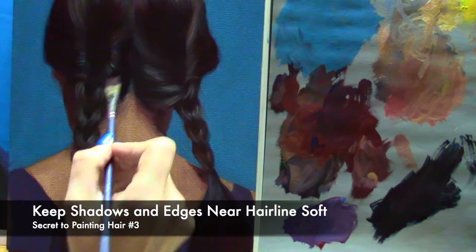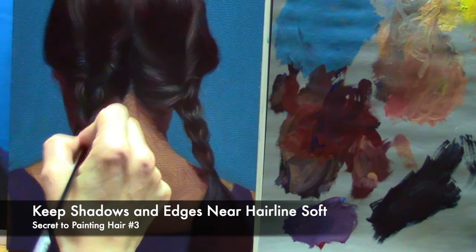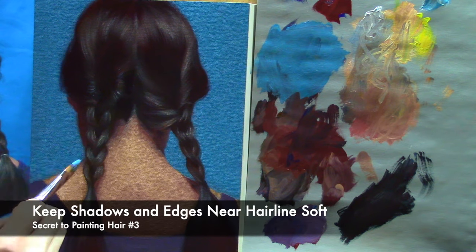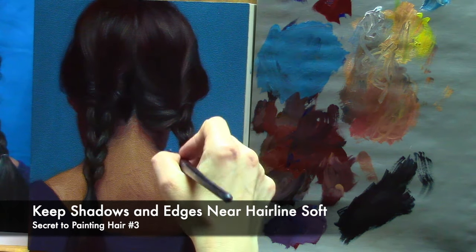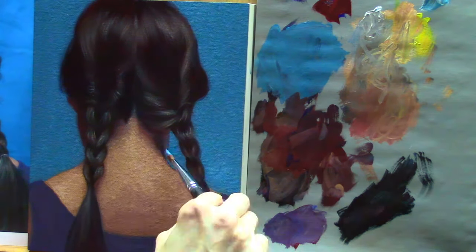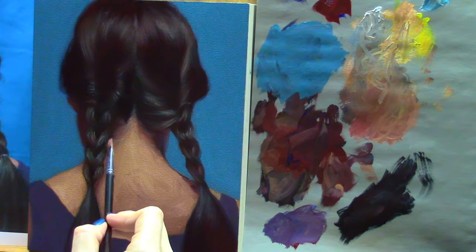This particular painting doesn't show a lot of where the hair meets the scalp but at the nape of the neck and also there's a little bit of the part in the hair you want to make sure and make that edge soft.